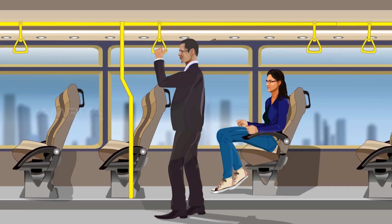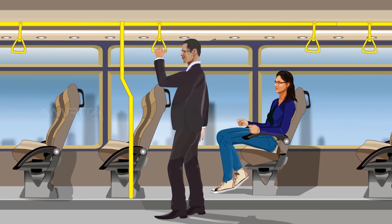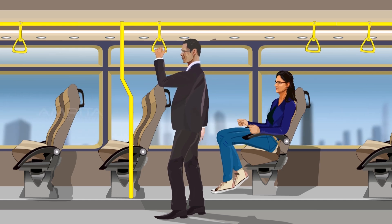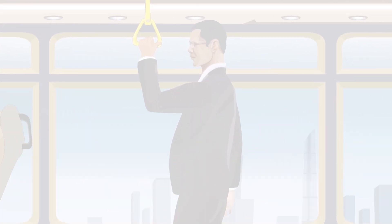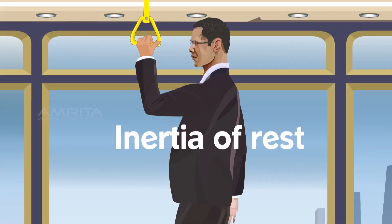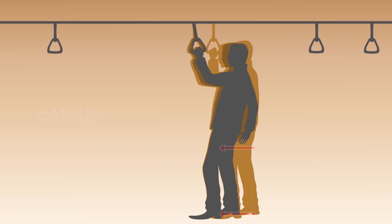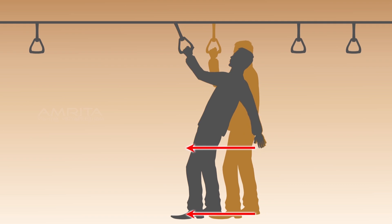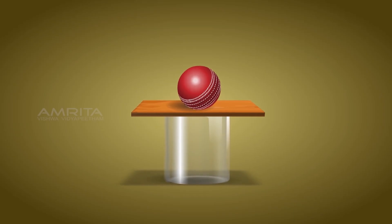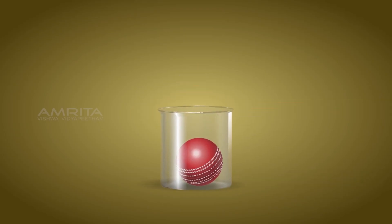When a passenger is standing in a stationary bus that suddenly moves, the movement pushes the passenger backward. Why does this happen? This is due to the inertia of rest experienced by the passenger in the upper part of his body. The body is at rest when the bus is at rest. When the bus starts all of a sudden, the lower part of the body is in contact with the vehicle that started moving, whereas the upper part of the body continues to be at rest because of the inertia of rest. Inertia of rest is the tendency of a body to resist any change in its state of rest.